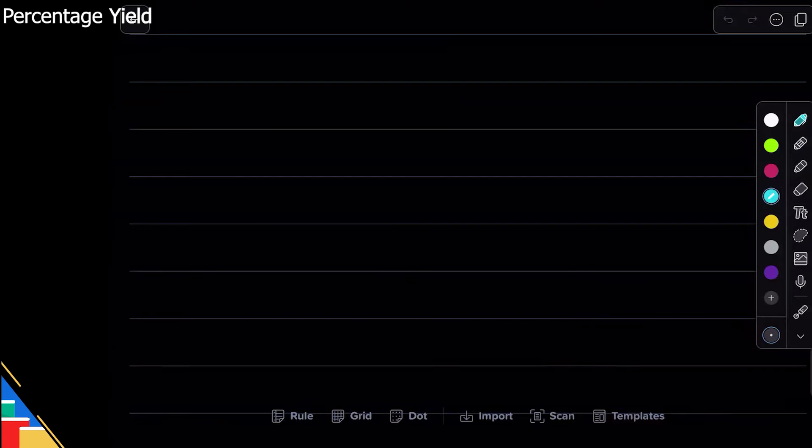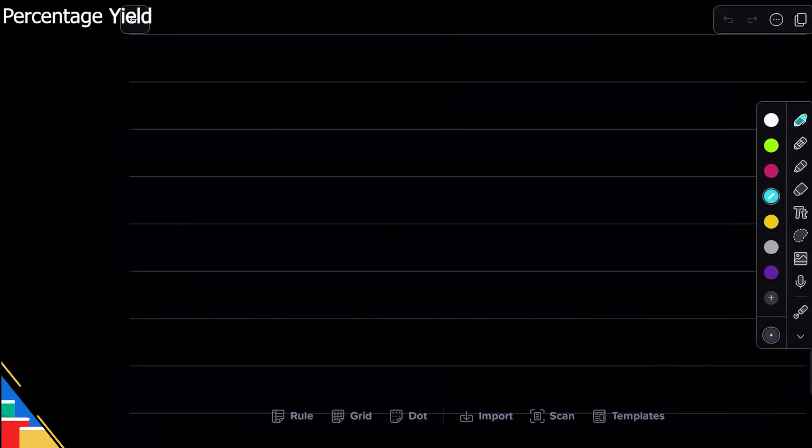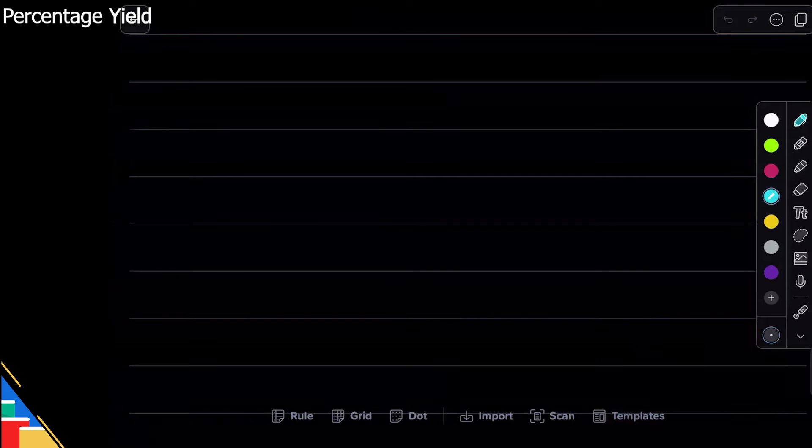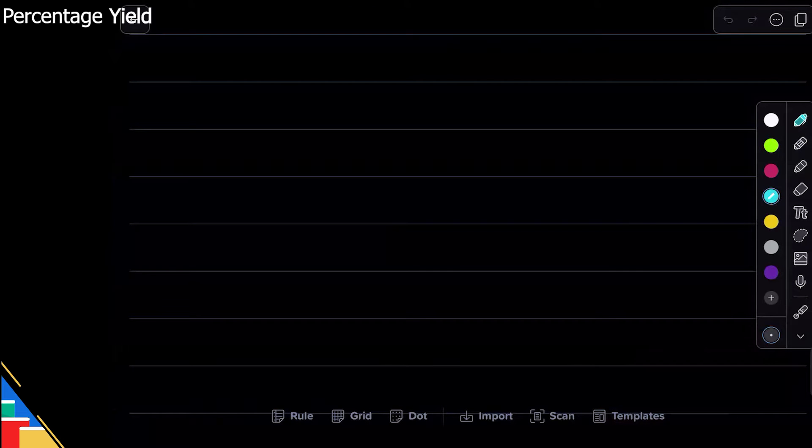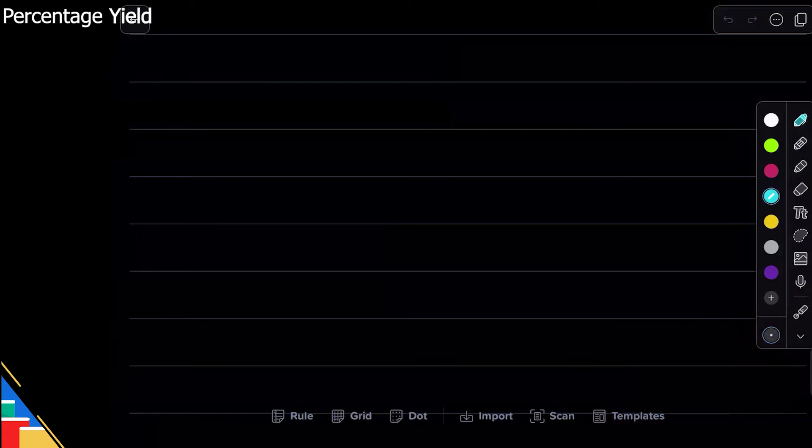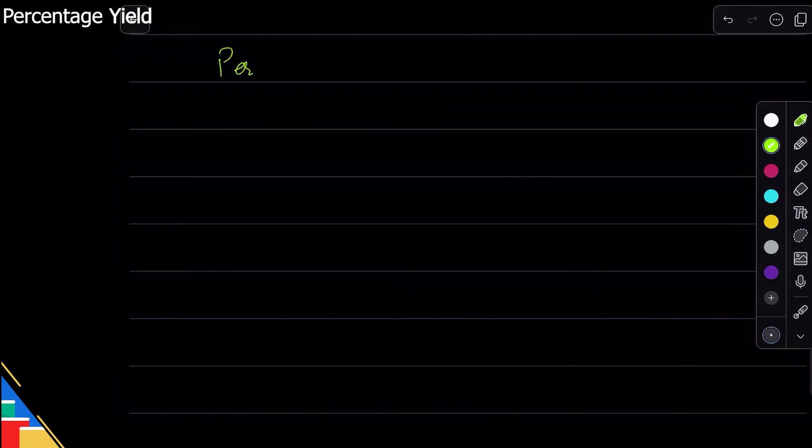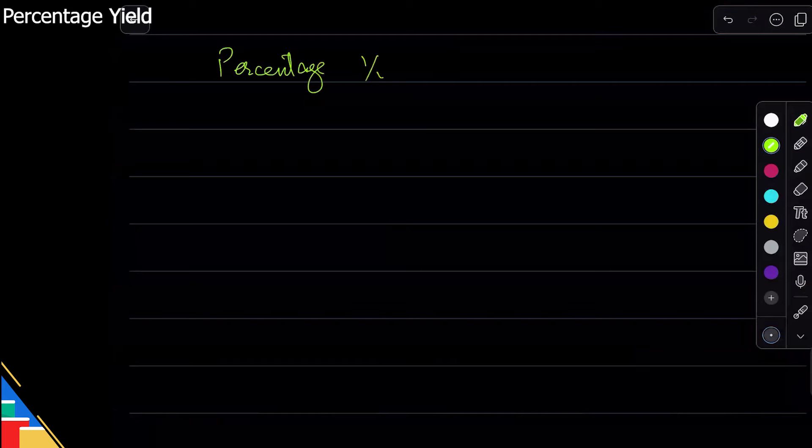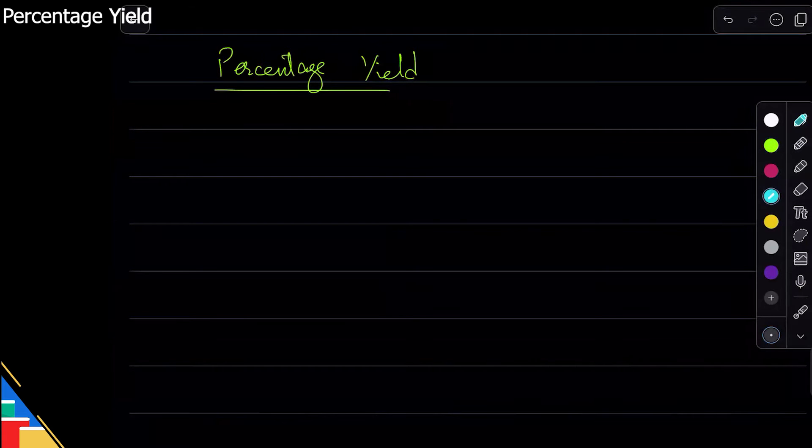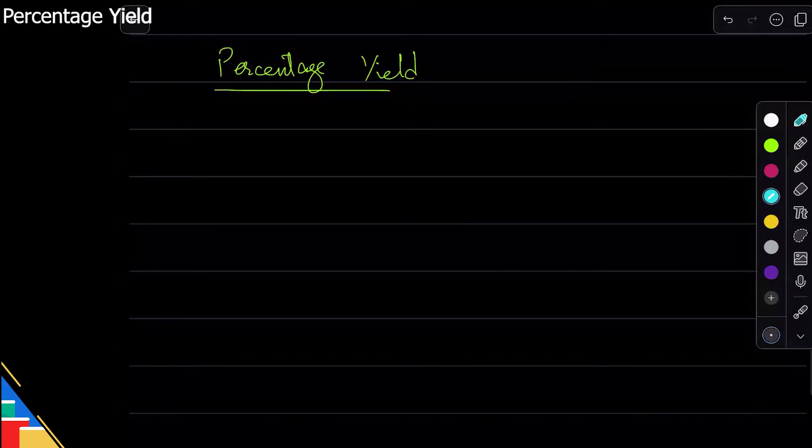Alright, so there's a couple of small concepts we need to review before we move on from the topic of moles. One of those is the concept of percentage yield. The idea is that when you do mole calculations, for example the one we did last time, what you're assuming is that the reaction goes to 100 percent, that everything that can be done is done. In practicality that's not the case.